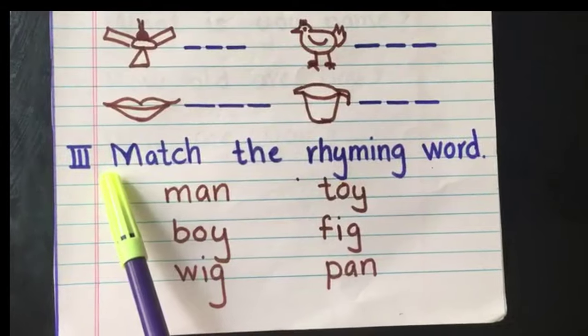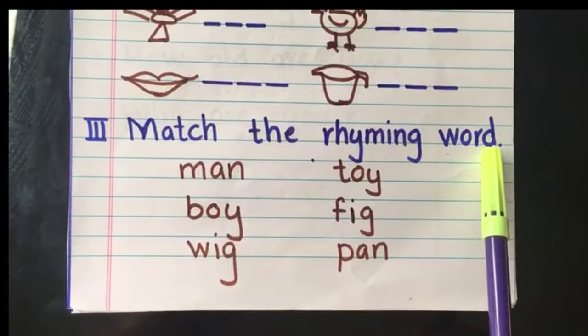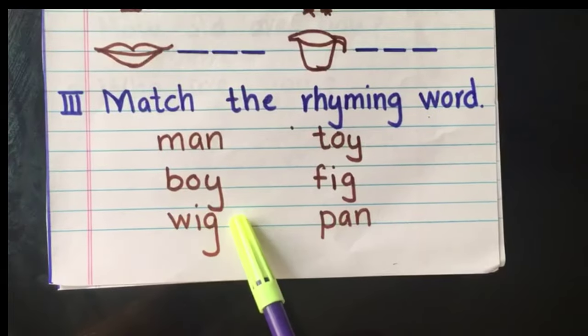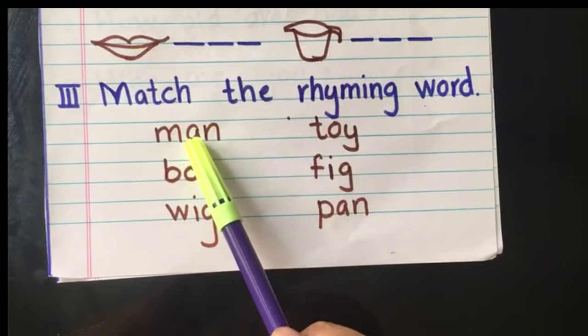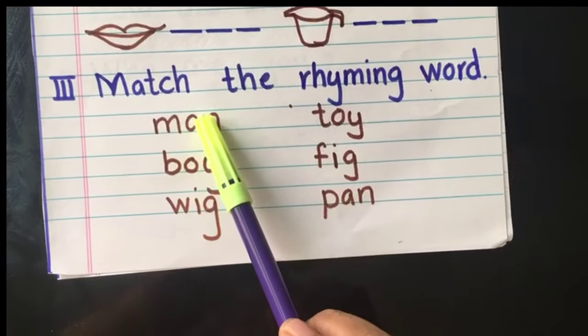The third question is, match the rhyming word. In my previous video, I have mentioned about the rhyming word. How to teach rhyming word for your child. So the last sound, the sound of the last letters, like ma, an.